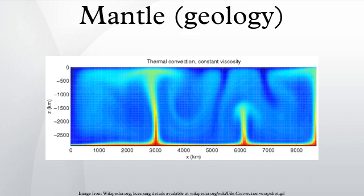The mantle is a part of a terrestrial planet or other rocky body large enough to have differentiation by density. The interior of Earth, similar to the other terrestrial planets, is chemically divided into layers. The mantle is a layer between the crust and the outer core.